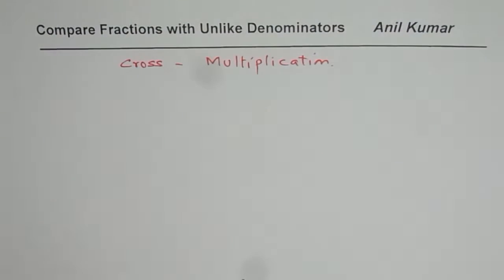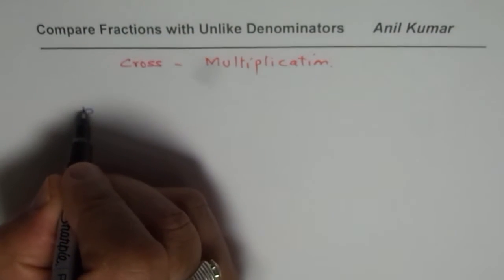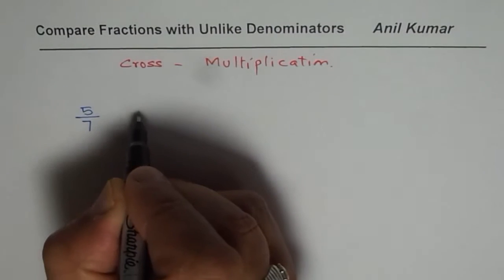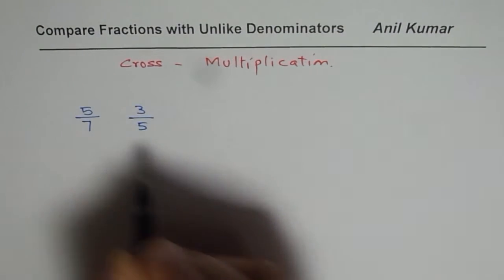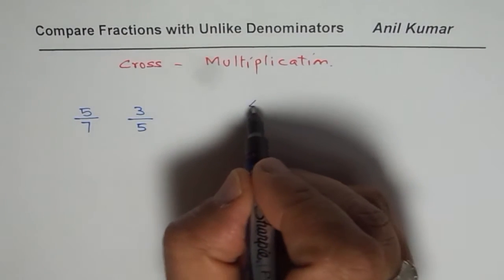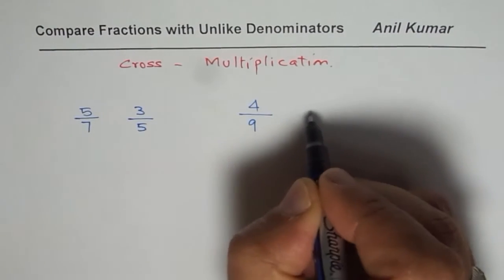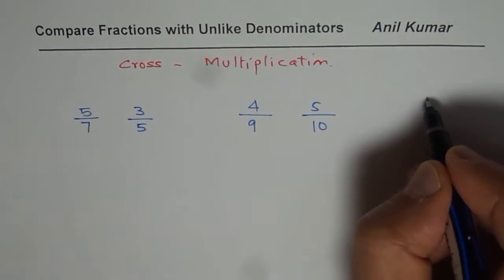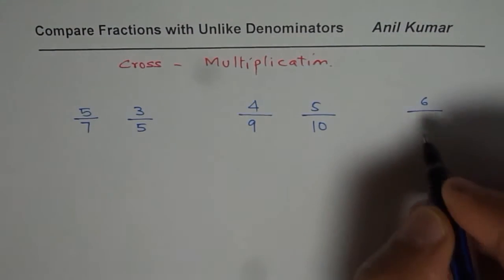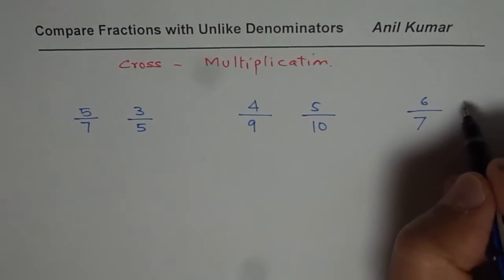Let me write down some examples. So let us say we have 5 over 7 and 3 over 5. So let me add some more numbers here. 4 over 9 and 5 over 10. And let me write down here 6 over 7 and then 3 over 5.